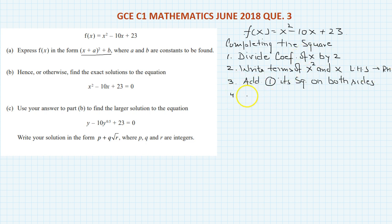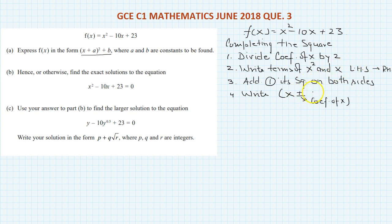Fourth, write x then either plus or minus — the sign matches the sign of the coefficient of x. If it is plus you write plus, if it is minus you write minus. Then write whatever number you got squared in that form. Let me show you this method.